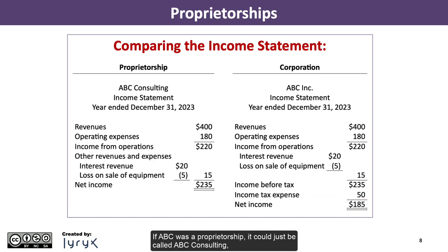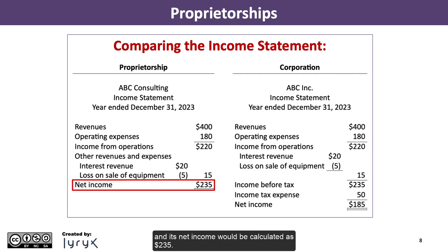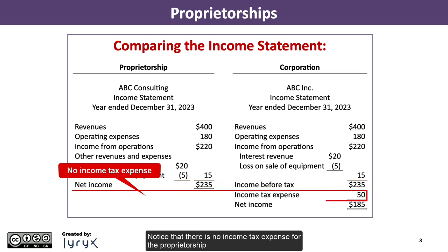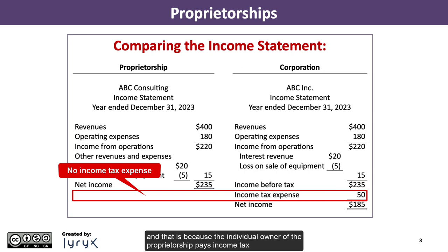If ABC was a proprietorship, it could just be called ABC Consulting and its net income would be calculated as $235. This is the same as the corporation's income before tax. Notice that there is no income tax expense for the proprietorship because the individual owner pays income tax on all his or her income, which could include sources other than the proprietorship.